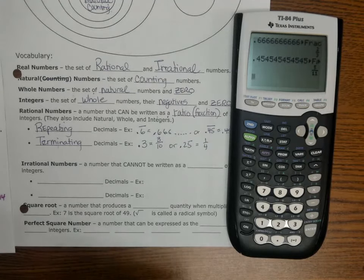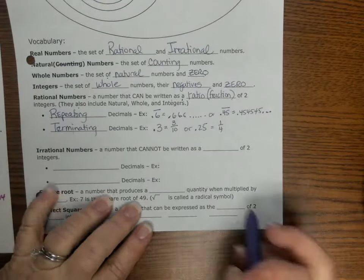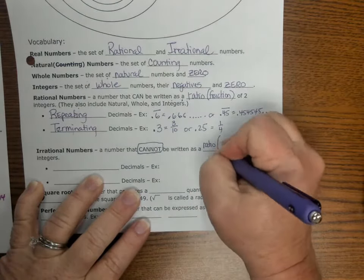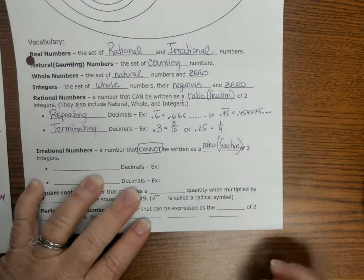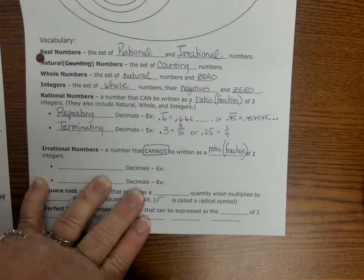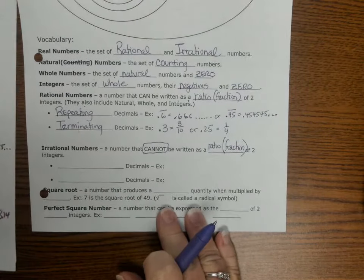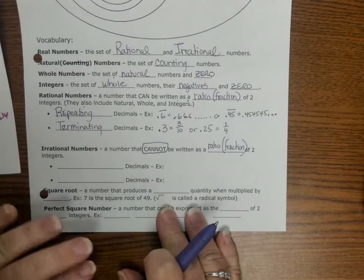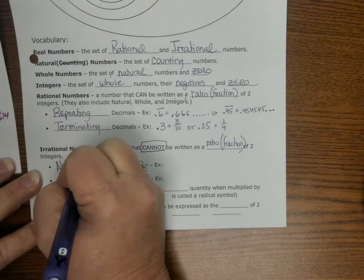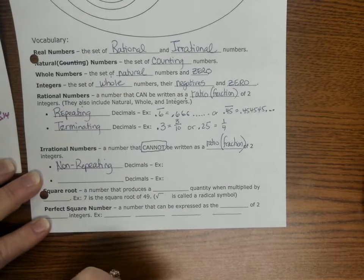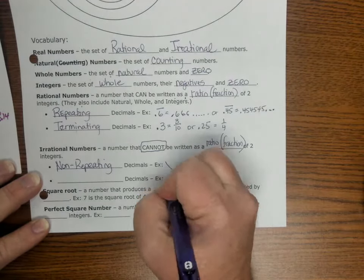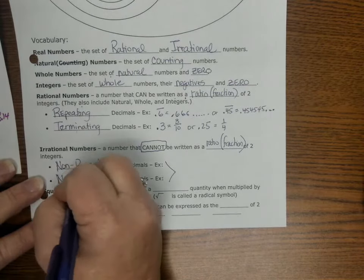So this year, we are learning about irrational numbers, and an irrational number is a number that cannot be written as a ratio. And we are going to write the word fraction in here, because some people forget what the word ratio means, of two integers. So it means two whole numbers, negative or positive, including zero. So they cannot be written as two integers, fraction.